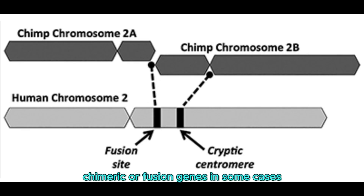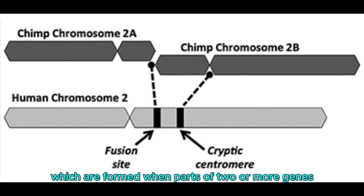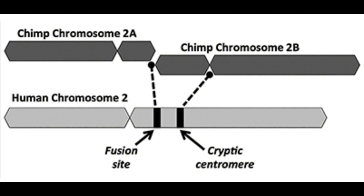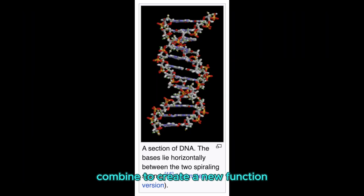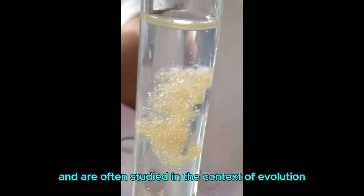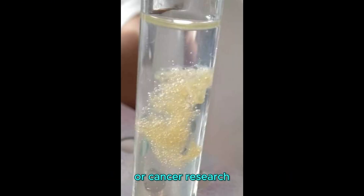Chimeric or fusion genes: In some cases, evolution creates chimeric genes, which are formed when parts of two or more genes combine to create a new function. These have been found in the human genome and are often studied in the context of evolution or cancer research, where abnormal gene fusions can occur.